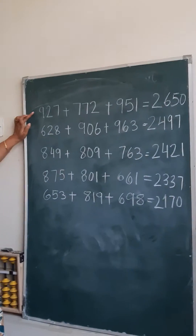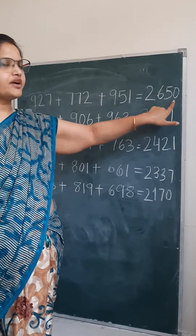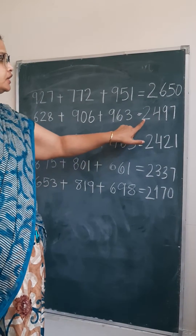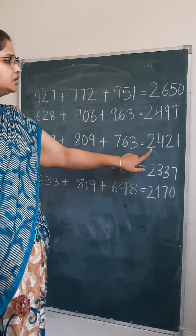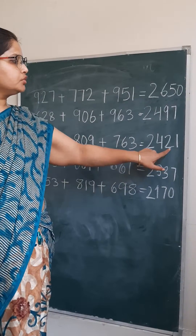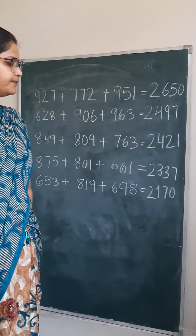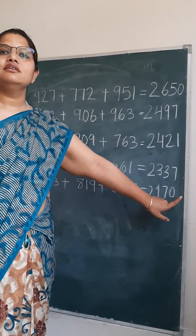Write the answers. Now we will check the answers. This is the first question and the first answer is 26,500. Second answer is 2,497. Third answer: 2,421. Fourth: 2,337. And last: 2,170.